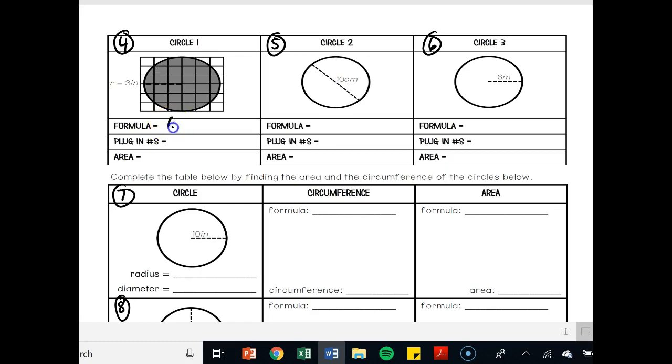The formula is a is equal to pi times the radius squared. So we plug in our numbers. a is equal to 3.14 times our radius in this case is 3. How did we get 3? Because here's the center of the circle and it is 1, 2, 3 units away from the center of the circle.